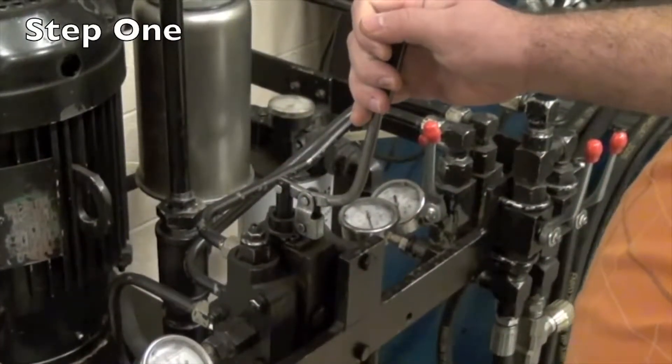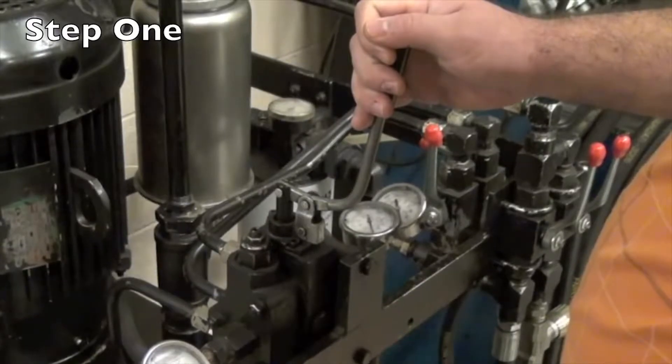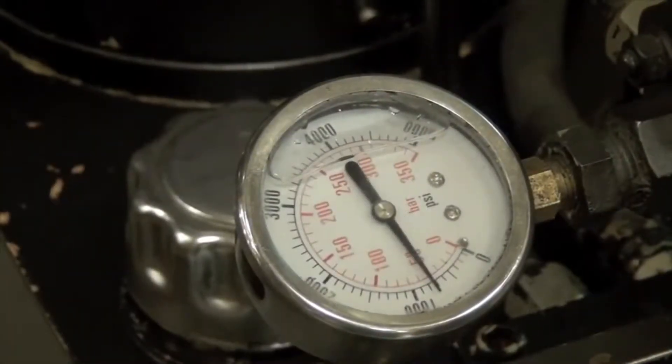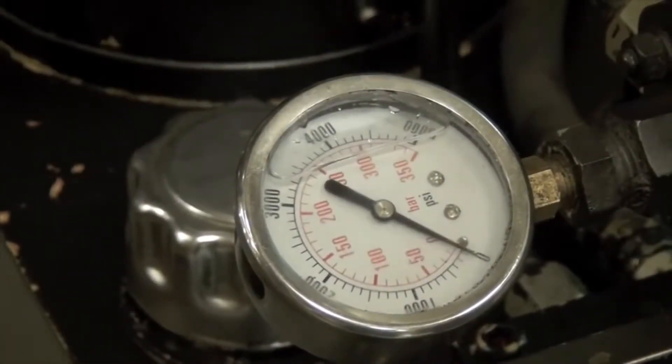Step 1. Determine your system's current pressure. You can do this by creating pressure in the system while monitoring your pressure gauge.